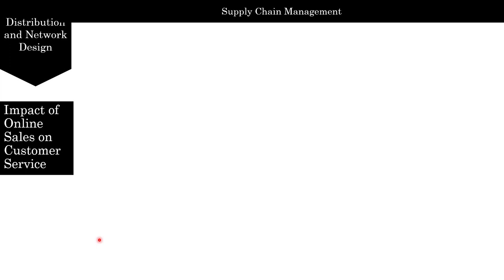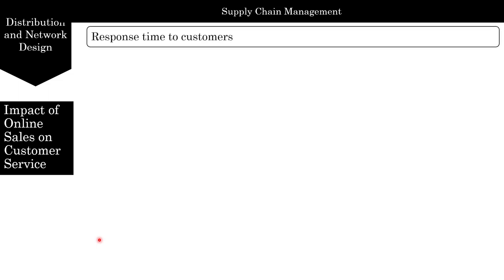Let's talk about the impact of online sales on customer service. When selling physical products that cannot be downloaded, online sales takes longer to fulfill a customer request than a retail store because of the shipping time involved. A customer who requires a short response time may not use the internet to order a product. There is no such delay for information goods — the internet has facilitated almost instantaneous access to movies, music, and books in digital form.